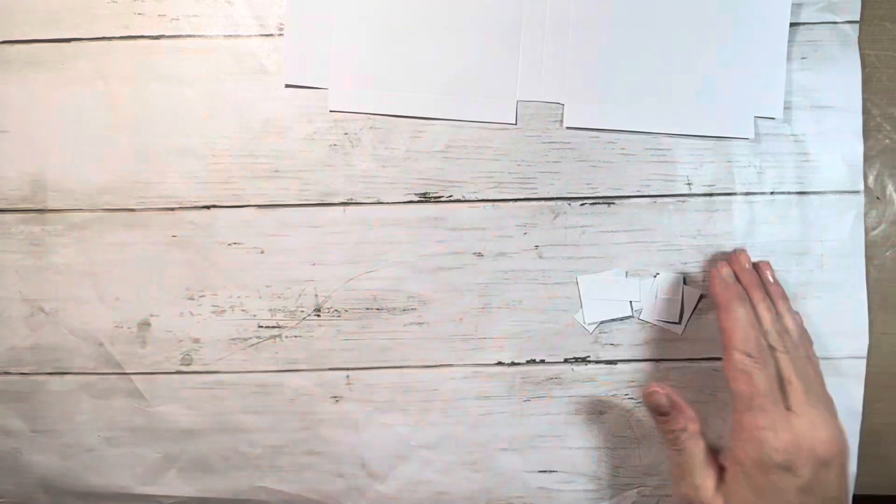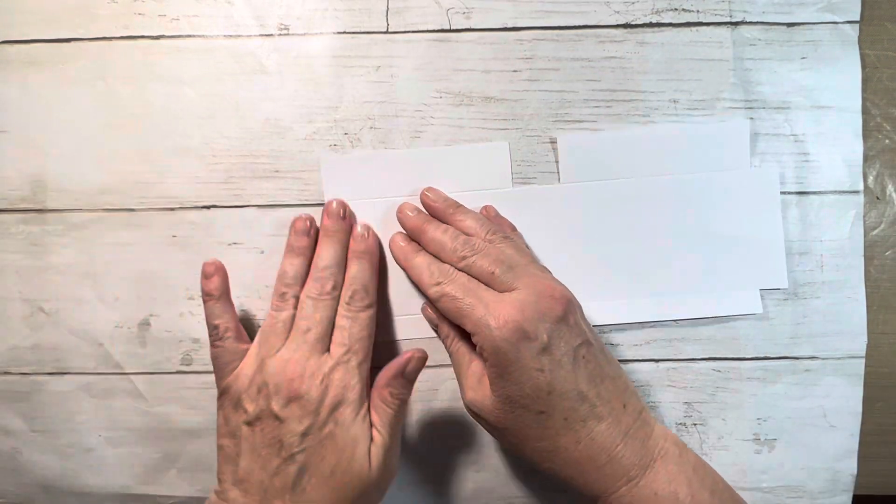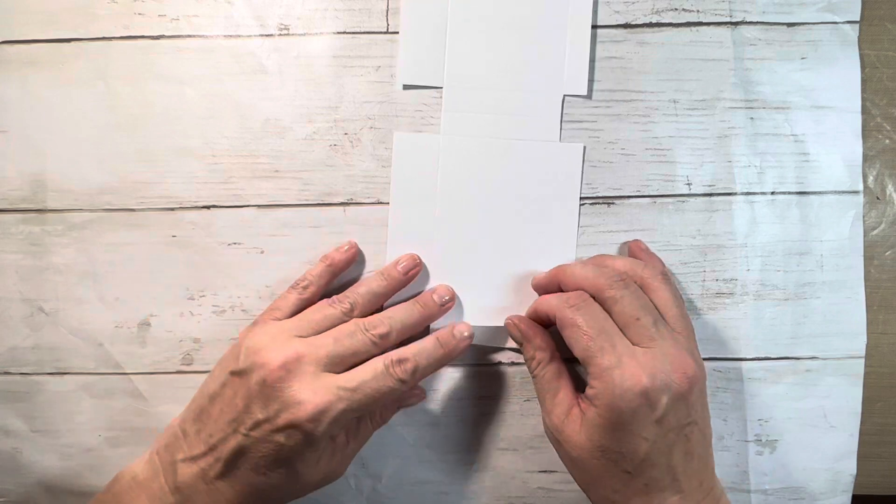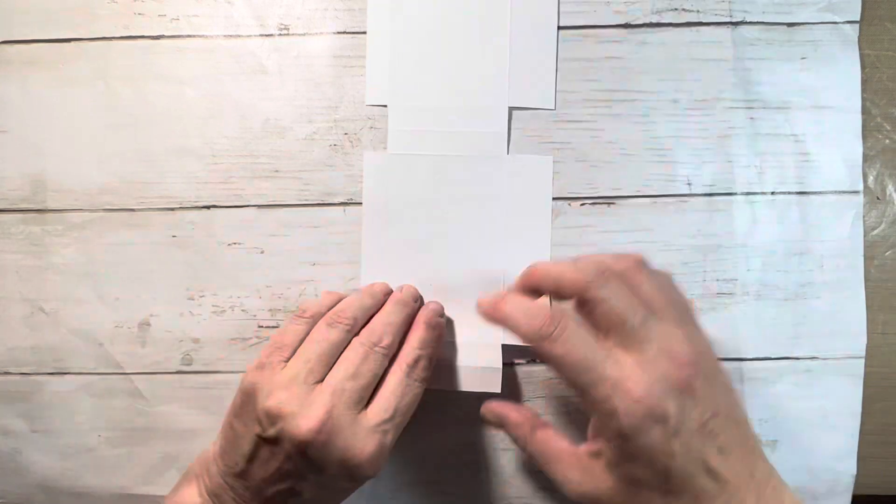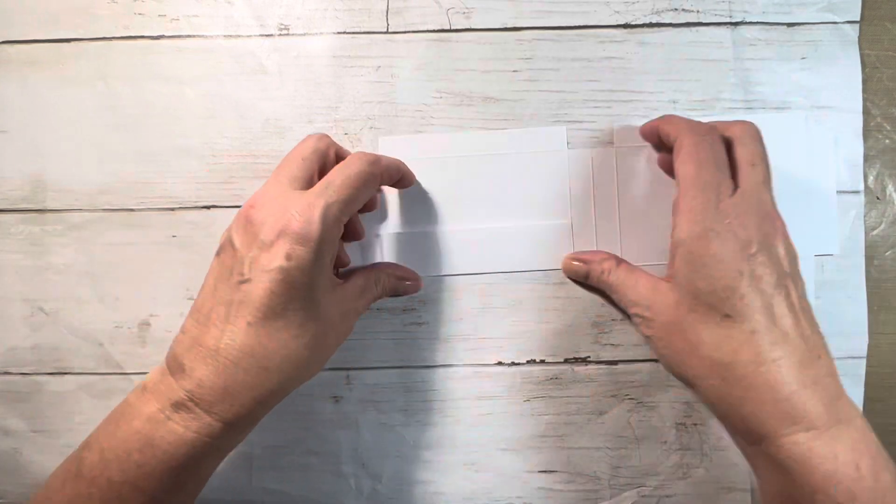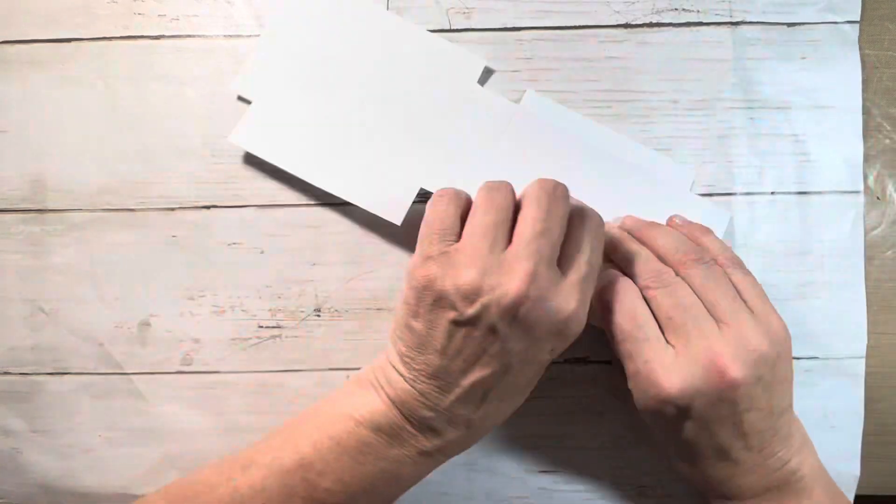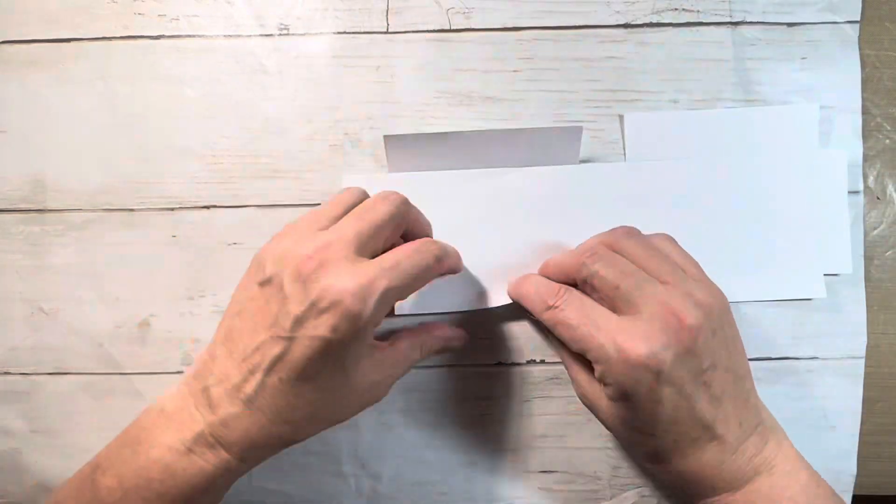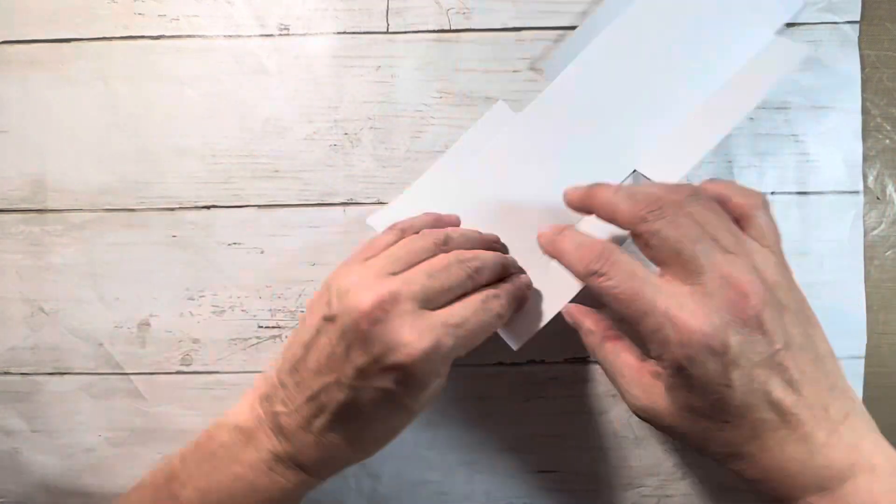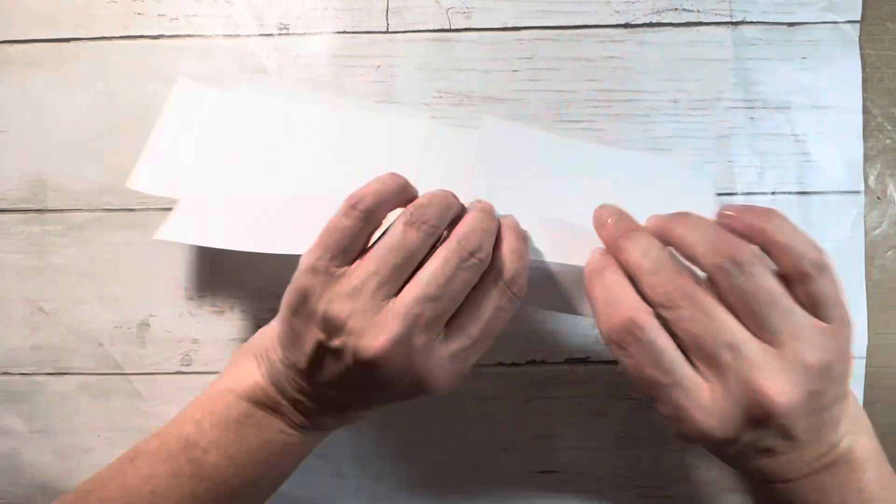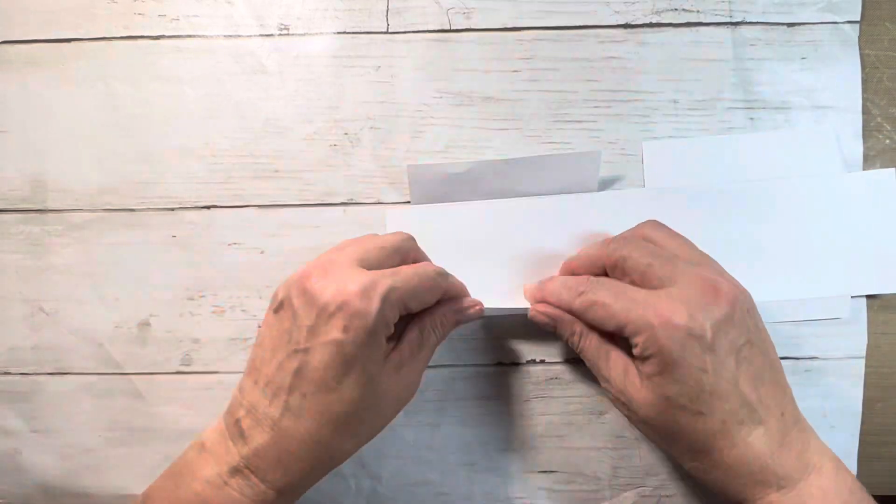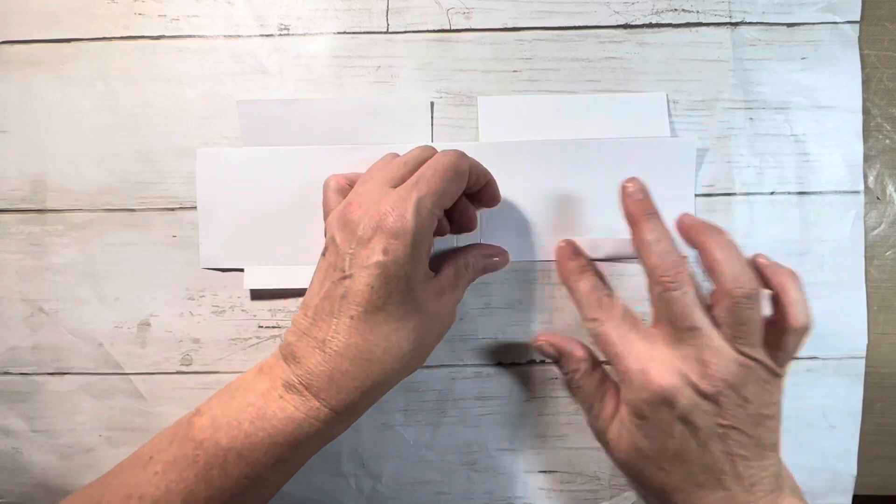Now we are going to be embossing this with the Christmas Tidings embossing folder, but before we emboss you'll want to make sure that you fold all of your score lines. Sometimes when you use an embossing folder it really makes an impression and hides those lines, so make sure that you fold them so that they don't disappear into the embossing.